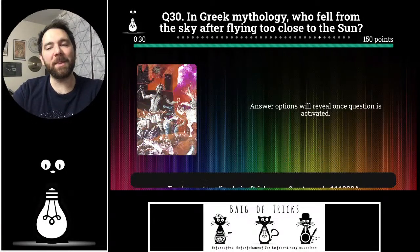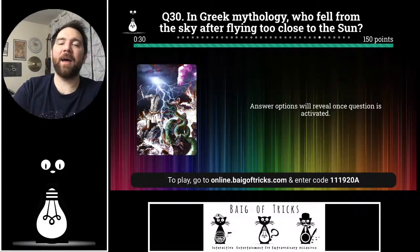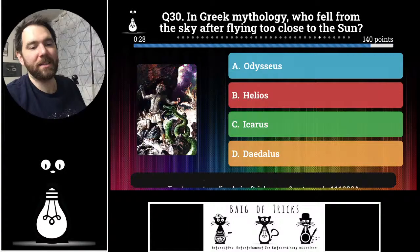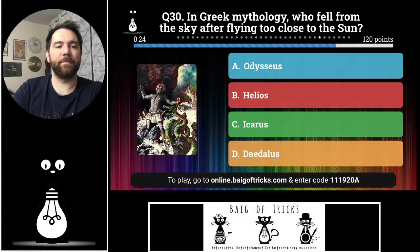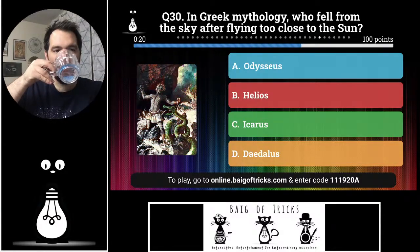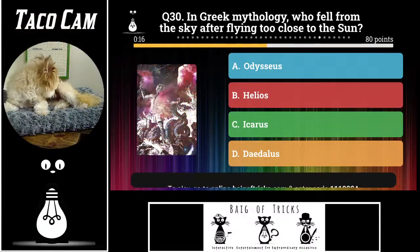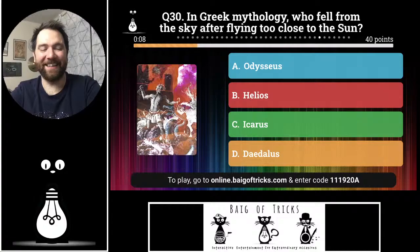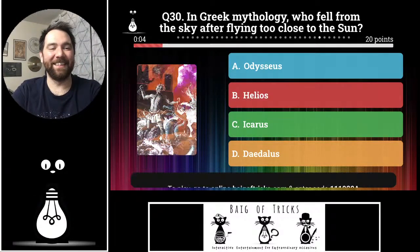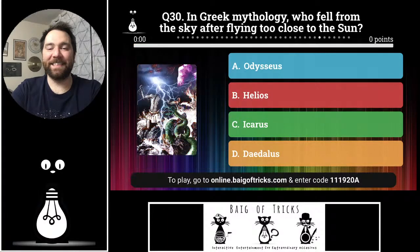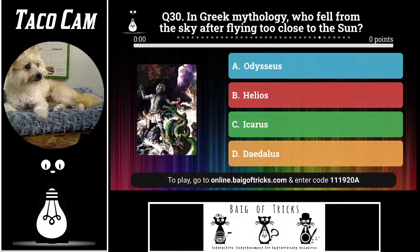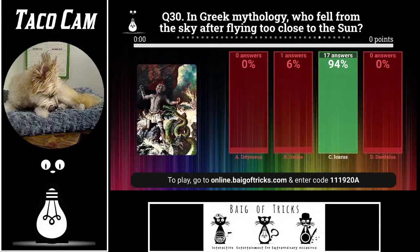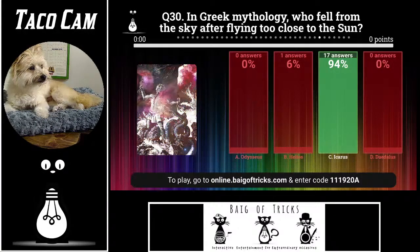Number thirty: in Greek mythology, who fell from the sky after flying too close to the sun? Was it Odysseus, Helios, Icarus, or Daedalus? One person said Helios, but seventeen of you correctly said Icarus. He had those wax wings, flew too close to the sun, and fell out of the sky. Great job — that's question thirty.